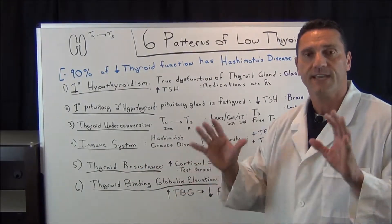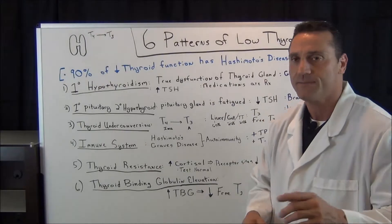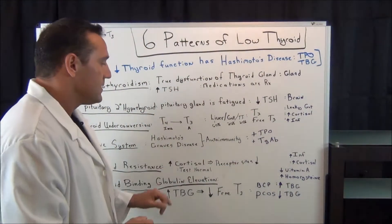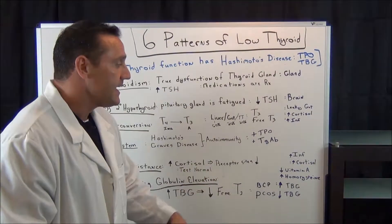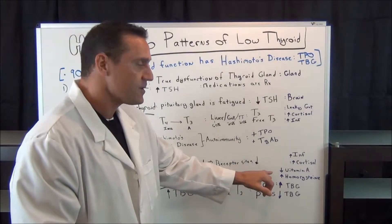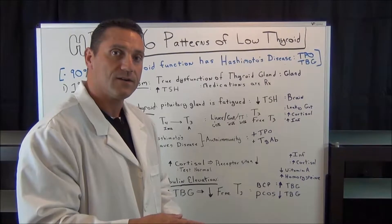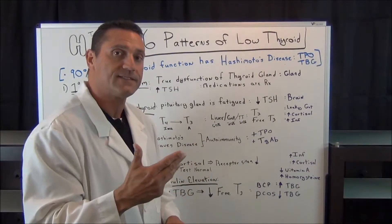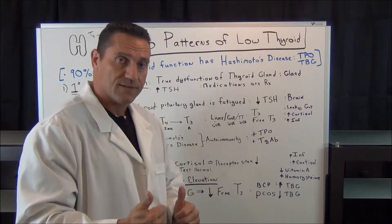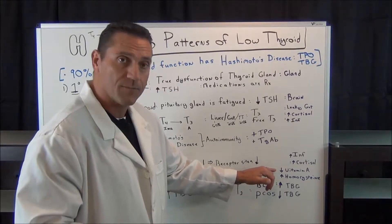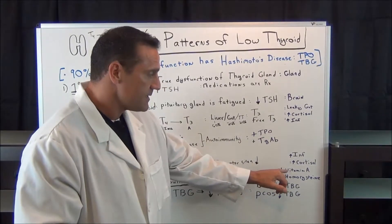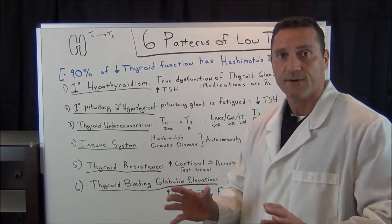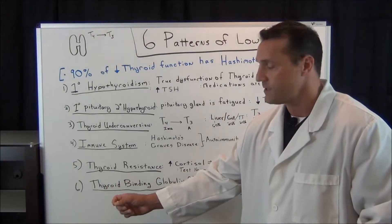Next is thyroid resistance — when all the tests come back normal but you're still experiencing hypothyroid symptoms. Increased cortisol from stress decreases receptor sites. This can also involve increased inflammation, elevated cortisol levels, or poor absorption of vitamin A. Issues with bile production from the gallbladder — or the absence of a gallbladder — reduce absorption of fat-soluble vitamins A, D, E, and K. You could also have gut inflammation or elevated homocysteine levels. These are all indicators of thyroid resistance despite normal test results.